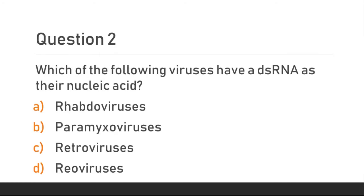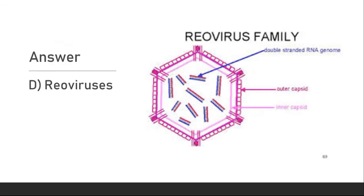Question 2. Which of the following viruses have dsRNA as their nucleic acid? Option A, Reovirus; Option B, Paramyxoviruses; Option C, Retroviruses; Option D, Reoviruses. The answer is Option D, Reoviruses.